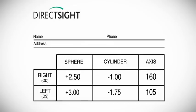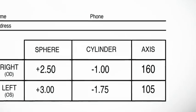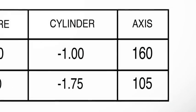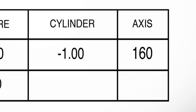If you have no astigmatism or distortion to your eye then your prescription is now complete. If you do need your glasses to correct astigmatism, then there will be numbers listed under cylinder and axis. You may only have astigmatism in one of your eyes, so if one of the lines is blank, just leave it that way.